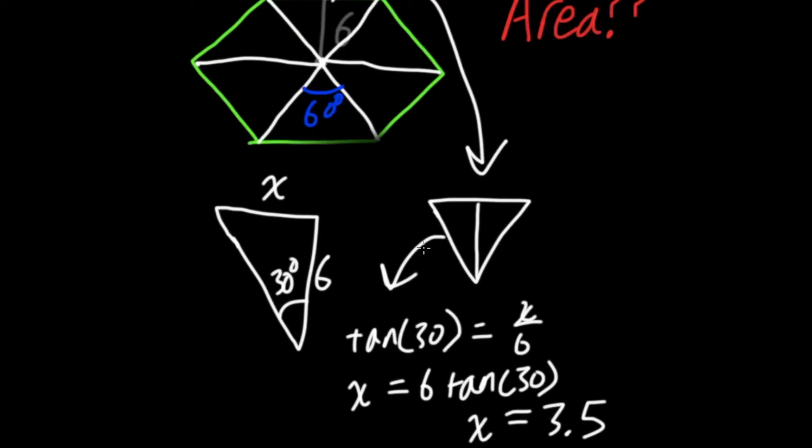Now remember, this x here is only half of this triangle. So if we went all the way across, it would be double this. So this entire length is actually 3.5 times 2, which is 7.